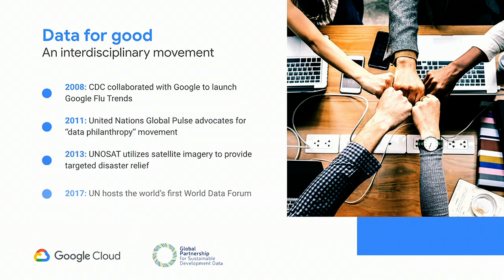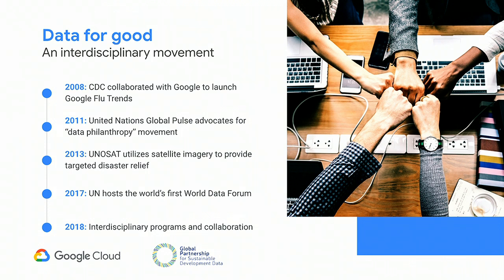Before digging deeper into what Google Cloud and the Global Partnership team are doing in this space, we want to look at Data for Good as a concept, as a movement, and discuss how it has evolved over time. Data for Good is an international movement where private companies are working with governmental agencies, NGOs, and nonprofits to apply big data solutions to some of the world's greatest challenges. Dating back to 2008, the CDC collaborated with Google to launch Google Flu Trends, with the idea that you could look at search trends around flu symptoms to actually help predict outbreaks in an area.